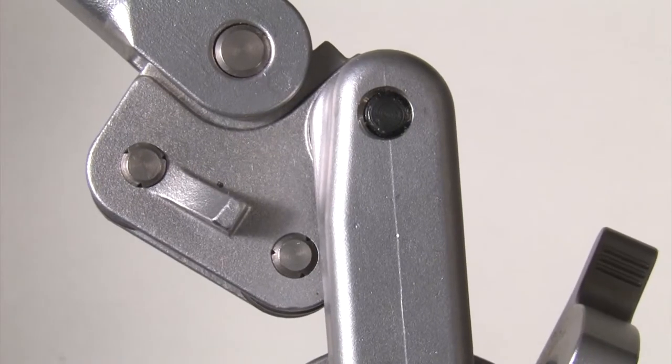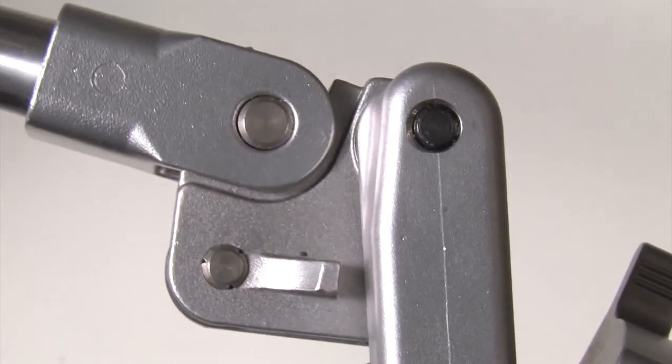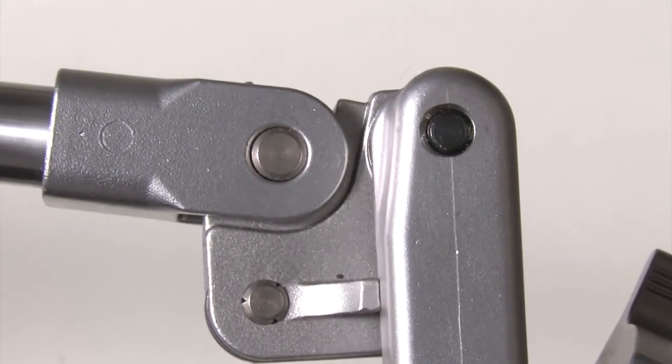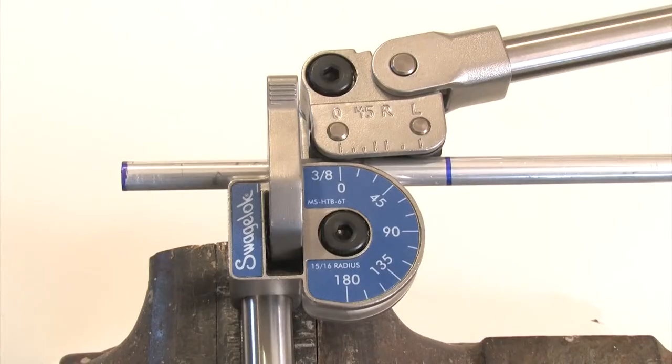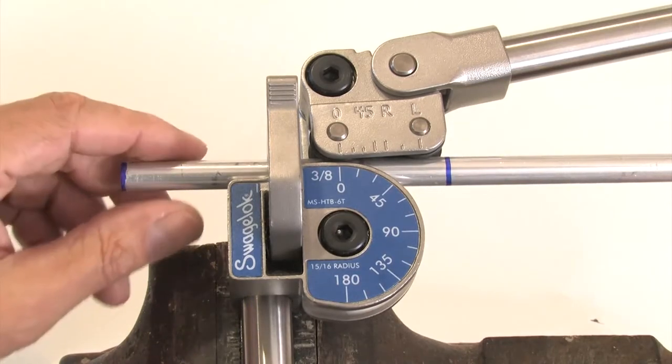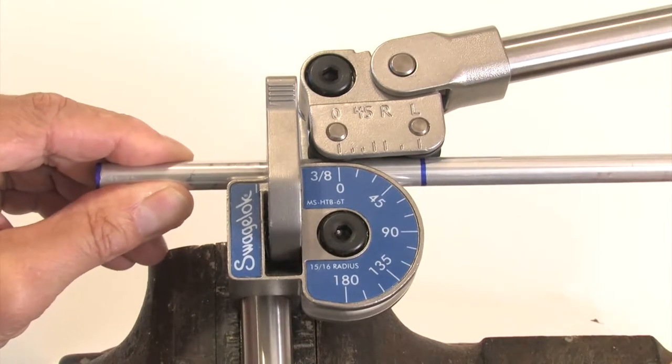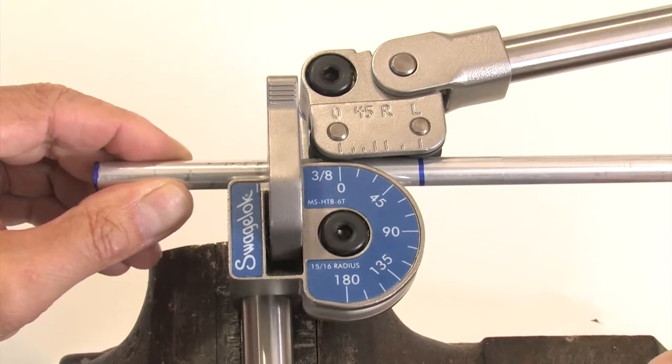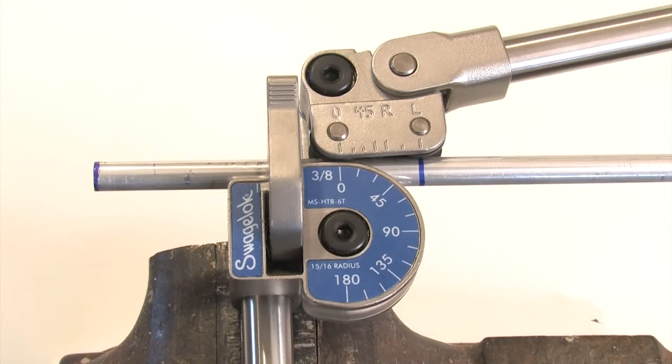Be sure that the stop on the handle contacts the link, otherwise the bend will not be accurate. Align the zero on the top scale with the zero on the degree scale. Line up the mark with the line on the top scale that matches the bend angle. For this 90 degree bend, line up the mark on the tube with the L mark on the top scale.